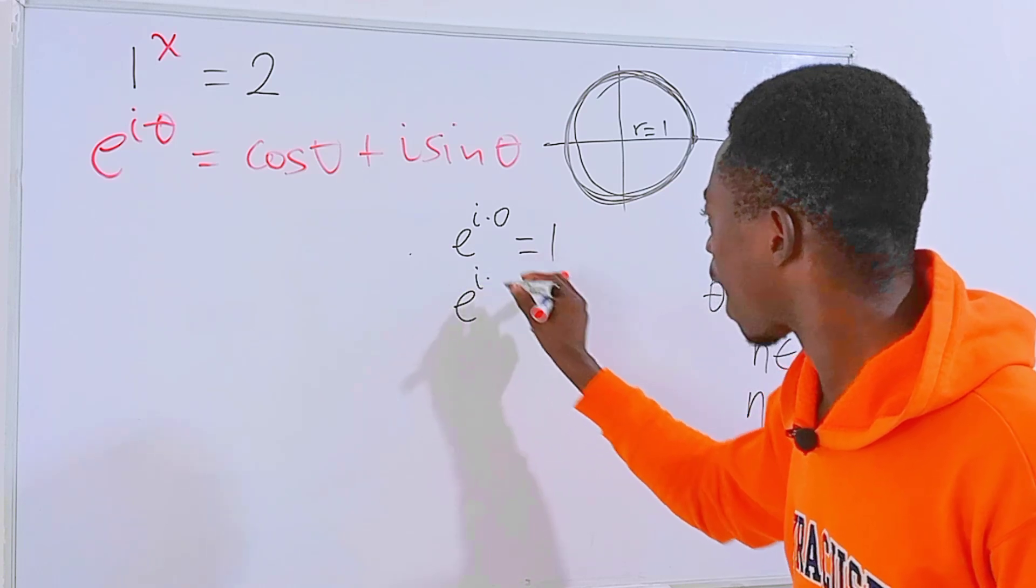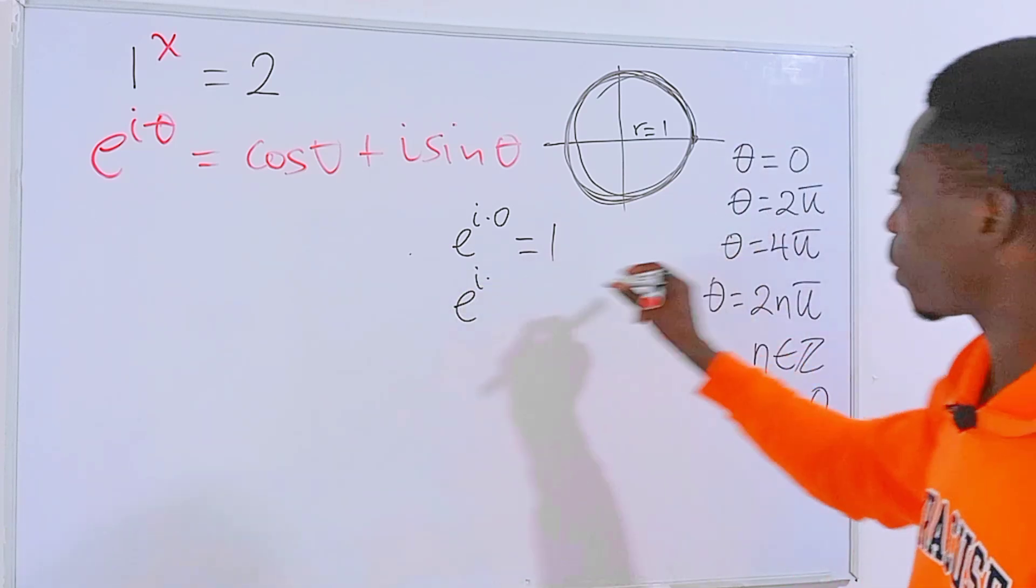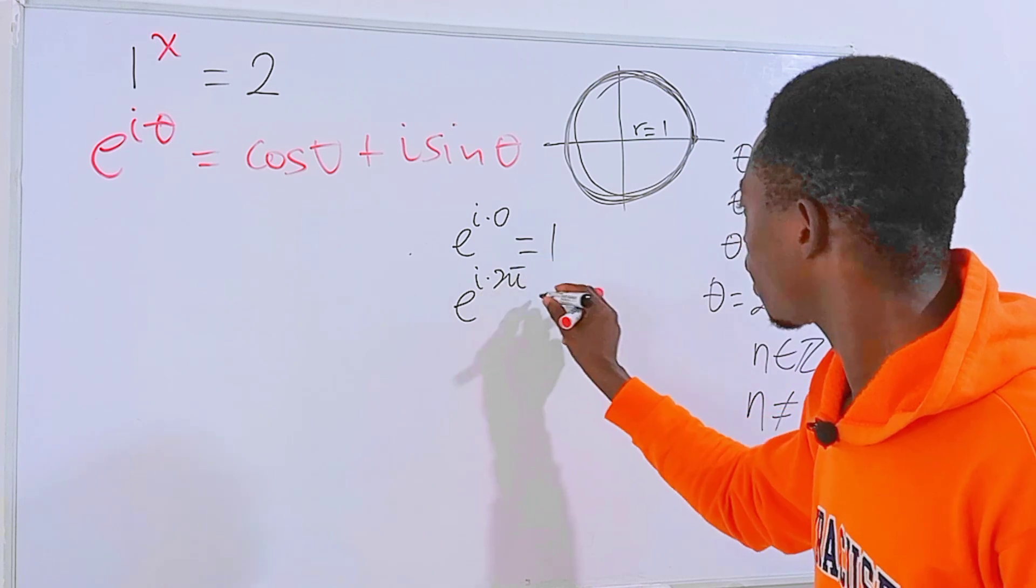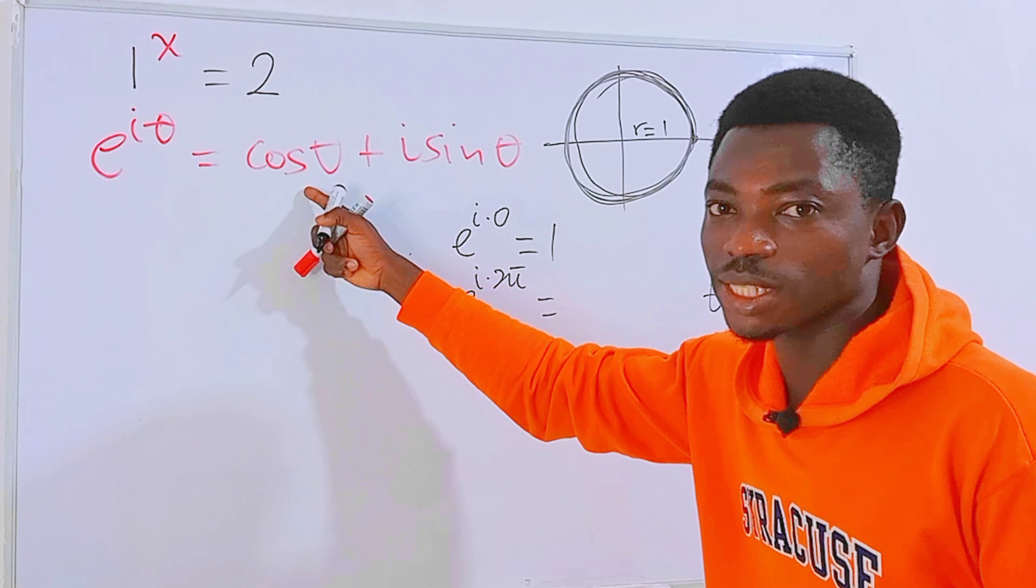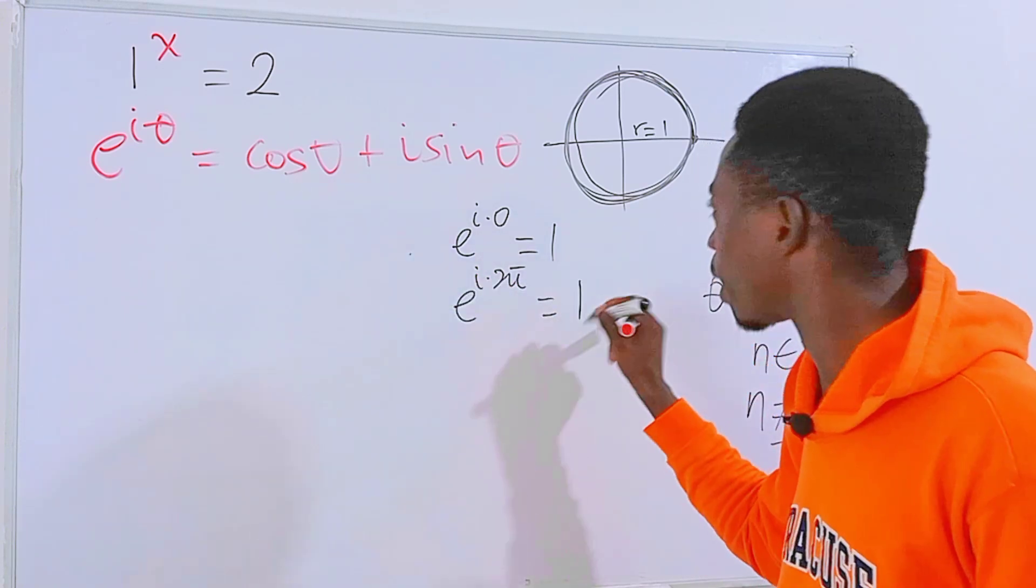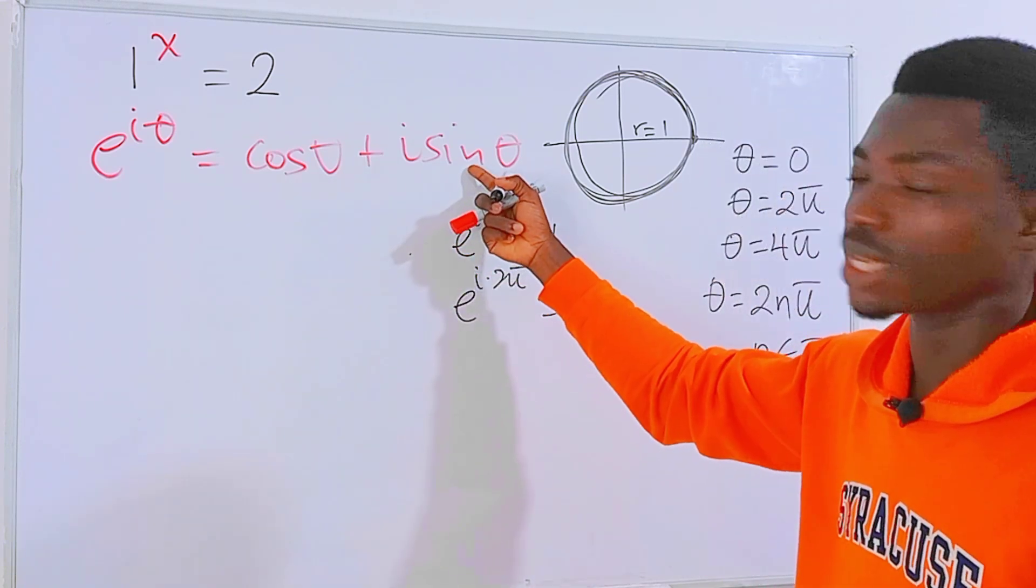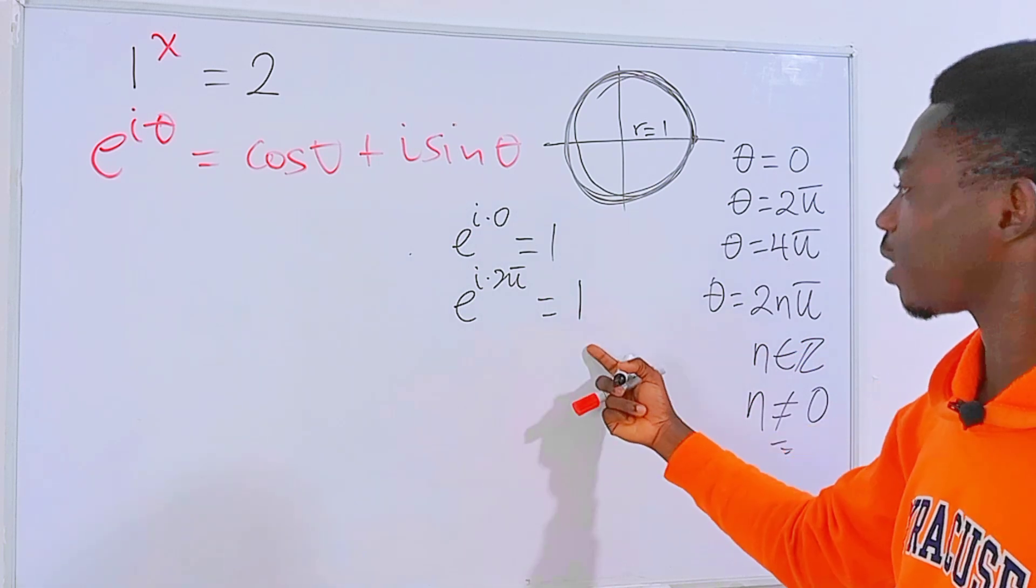E to the power i times 2π equals... 2π is 360 degrees. Cos of 360 degrees is simply 1. Sine of 360 degrees is 0. So we end up getting this.